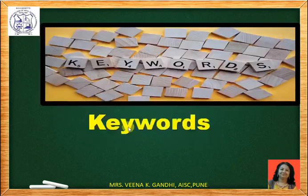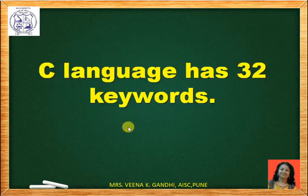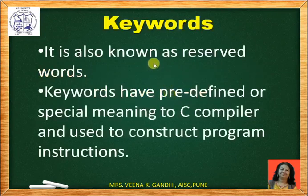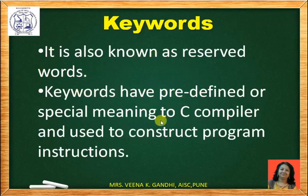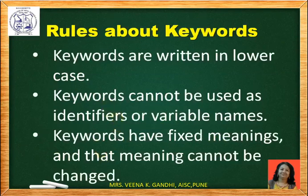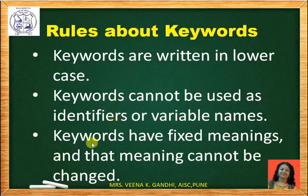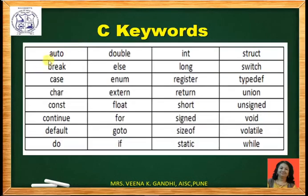The first type we will see is keywords. C language has 32 keywords. Keywords are also known as reserved words. Keywords have predefined or special meaning to the C compiler, and these keywords are used to control the program instructions. Keywords are written in lowercase. Keywords cannot be used as identifiers or variable names. Keywords have fixed meaning and that meaning cannot be changed.